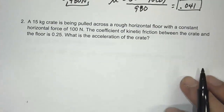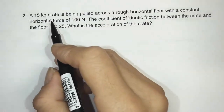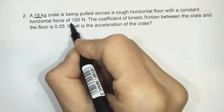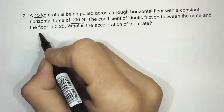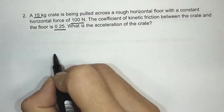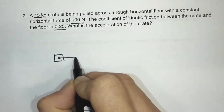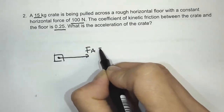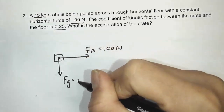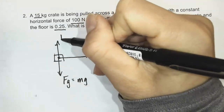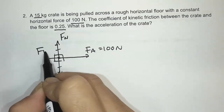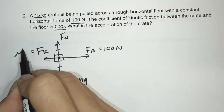Let's take a look at our second question. A 15 kilogram crate is being pulled across a rough horizontal floor with a constant horizontal force of 100 newtons. The coefficient of kinetic friction between the crate and the floor is 0.25. What is the acceleration of the crate? We're going to start again with our force diagram. We have an applied force of 100 newtons, a gravitational force mg, a normal force — these two are balanced — and kinetic friction equal to mu times Fn.